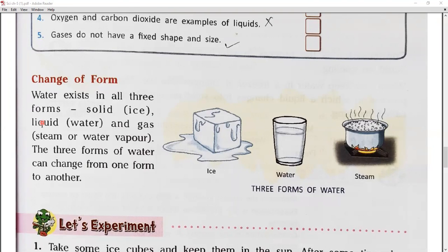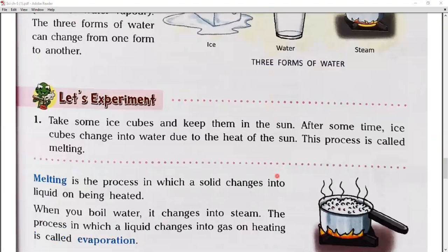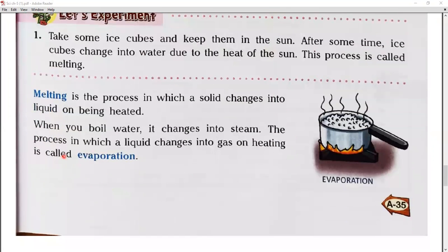The three forms of water can change from one form to another. Change of form is the process in which a solid changes into a liquid on being heated. This melting is the process of solid to liquid. We change through the process of melting.